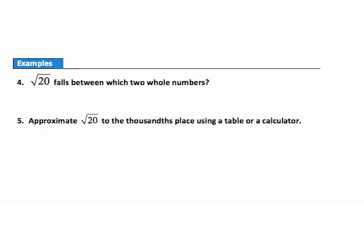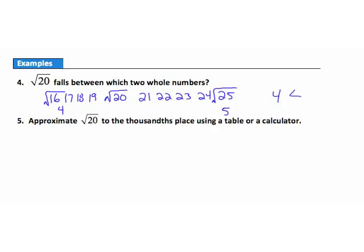Example 4: the square root of 20 falls between which two numbers? Looking below 20 for a perfect square: 19, 18, 17 are not perfect squares, but 16 is — its square root is 4. Looking above 20: 21 through 24 are not perfect squares, but 25 is — its square root is 5. So the square root of 20 falls between 4 and 5: it's bigger than 4 but less than 5.